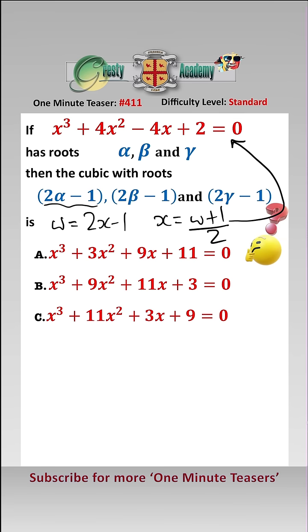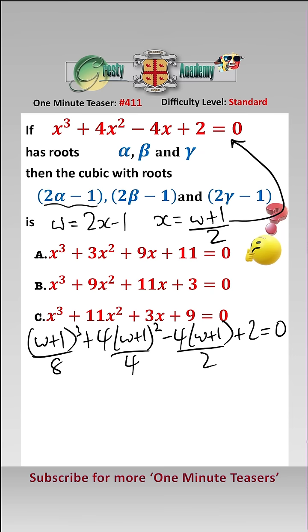Now what we need to do is stick that value of x into our cubic to get the new cubic. That is, w plus 1 cubed over 8, add 4 times w plus 1 squared over 4, minus 4 times w plus 1 over 2, add 2 equals 0.